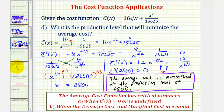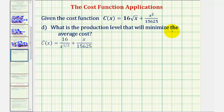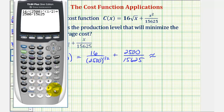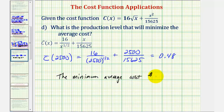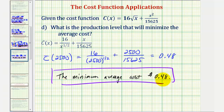Finally for part E, we're asked to determine the minimum average cost. The average cost function is minimized when x equals 2,500, so we evaluate the average cost function at x equals 2,500. This gives us $0.48, or 48 cents. So the minimum average cost per item is 48 cents. I hope you found this helpful.